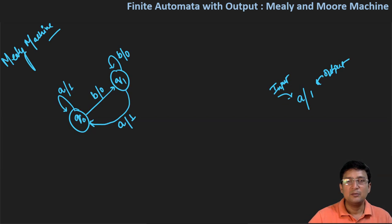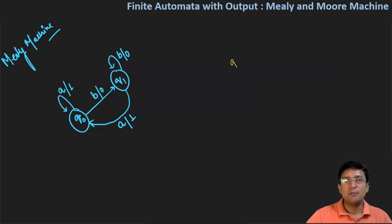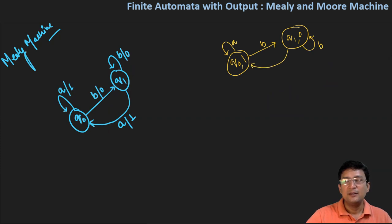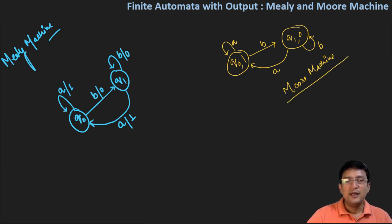Now let's see the Moore machine. In the Moore machine, the outputs are associated with the states. For example, if I have state q zero, the output one is associated with that state. And I have state q one, and the output associated with that state is zero. If I get symbol A, I remain at q zero state. If I get symbol B, I move to state q one. If I get A in q one, I go to q zero. And if I get B, I remain at q one. So in the Mealy machine, outputs are associated with the transitions, and in the Moore machine, outputs are associated with the states.